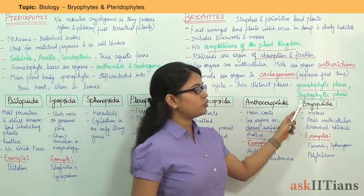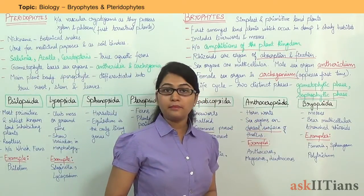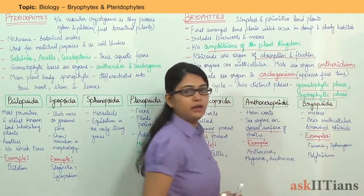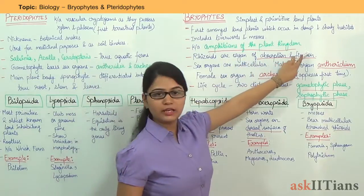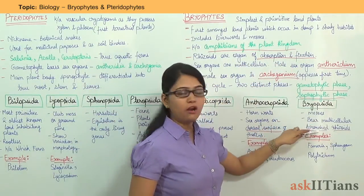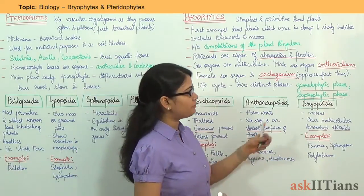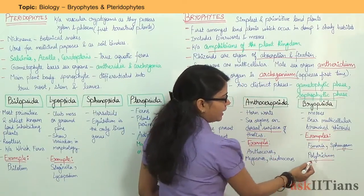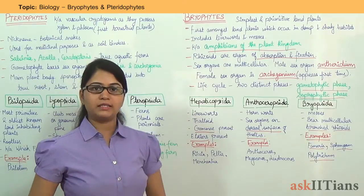Moving on to Bryopsida — Bryopsida are the mosses. They have multicellular branched rhizoids, which are the organs of absorption and fixation. The examples of Bryopsida are Funaria, Sphagnum, and Polytrichum. So this was all about Bryophytes.